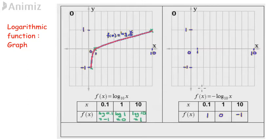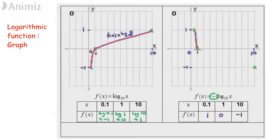Next, sketch f(x) equals negative log x base 10. Plot all the points: (0.1, 1), (1, 0), (10, -1). The curve will extend towards the fourth quadrant and goes to negative infinity. Label the curve as f(x) equals negative log x base 10.